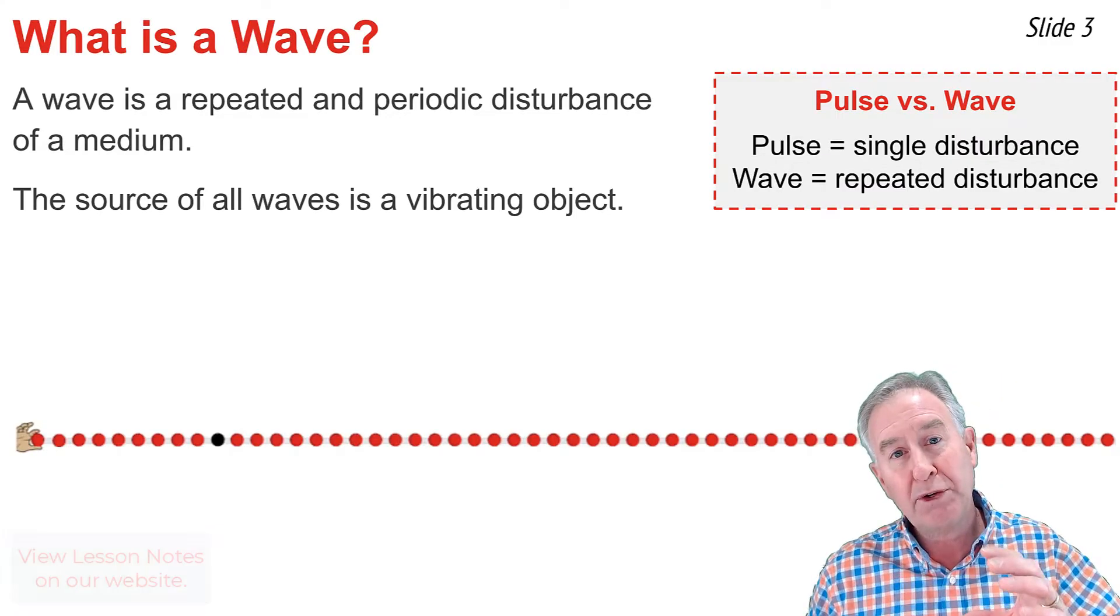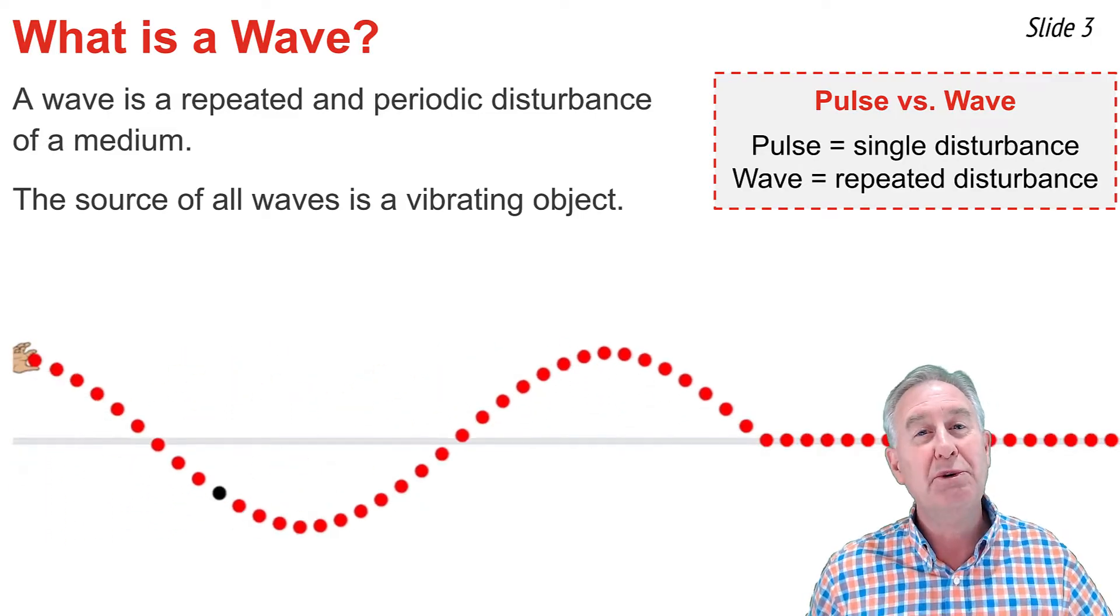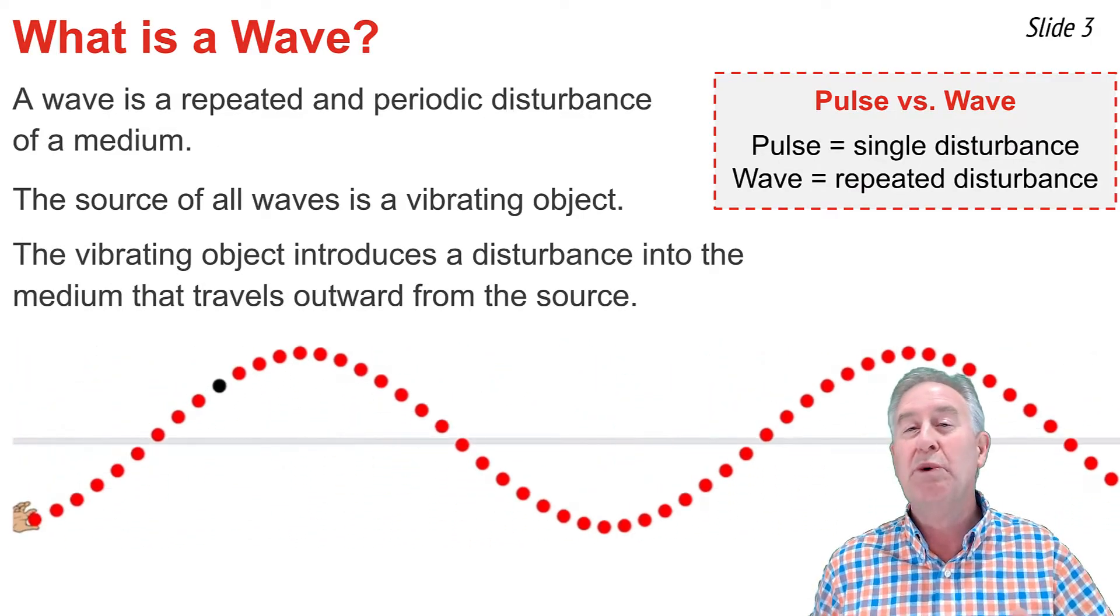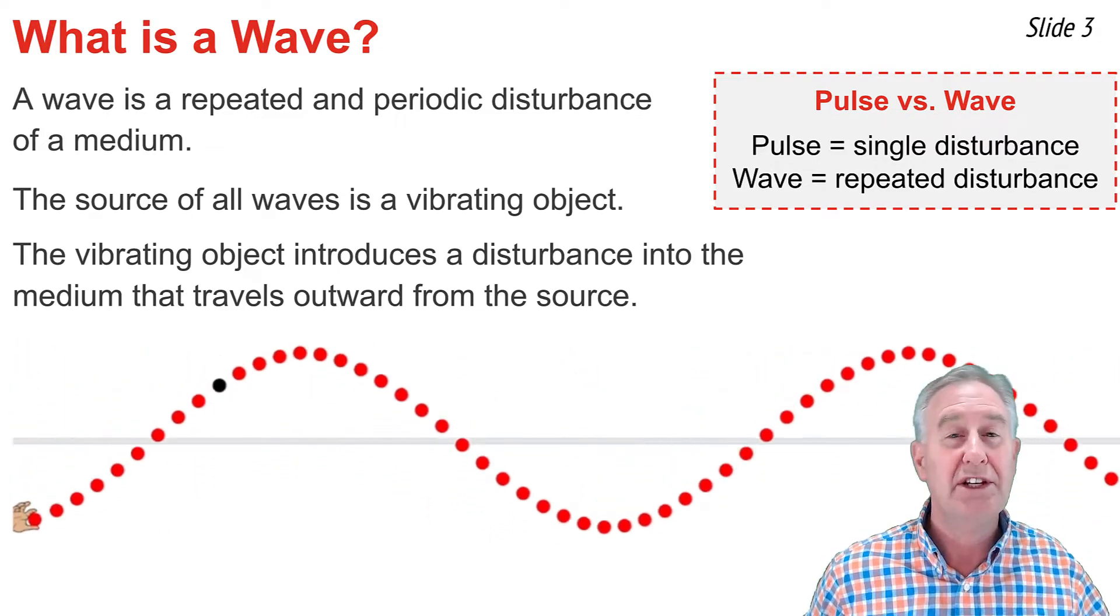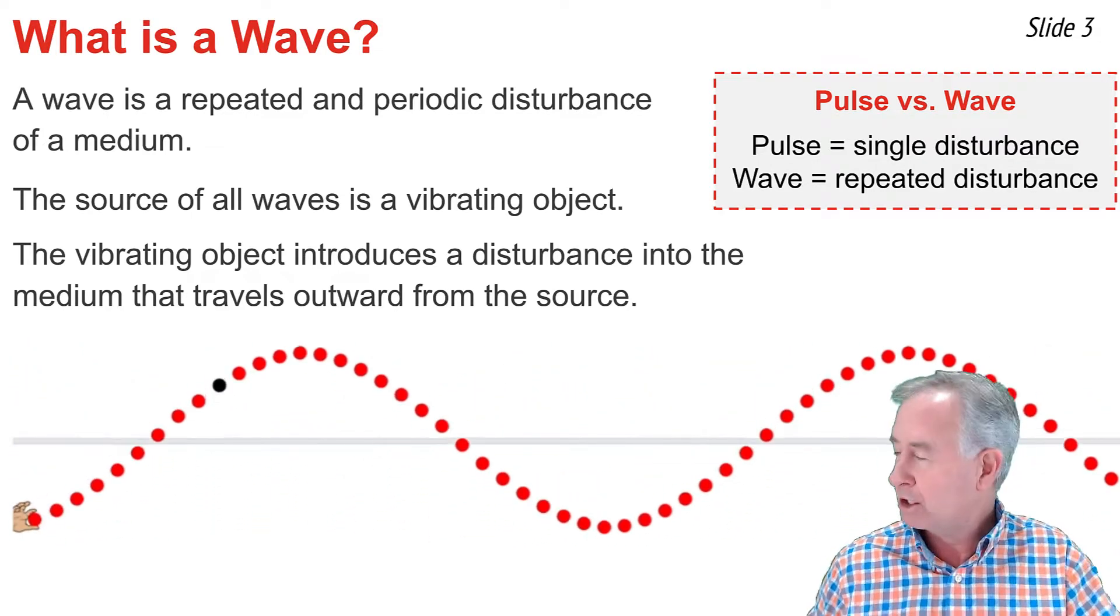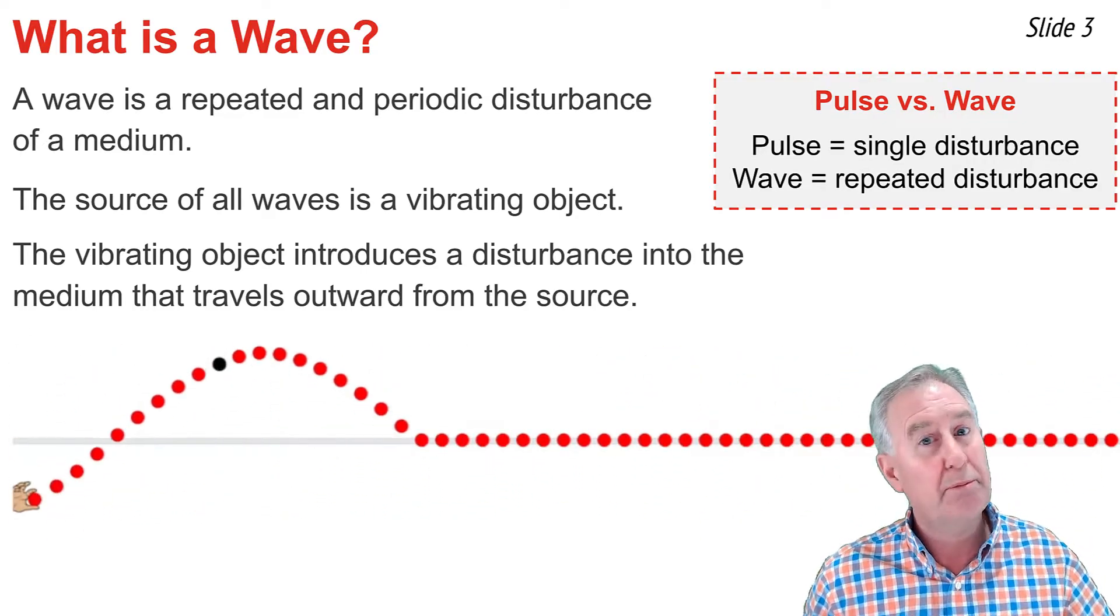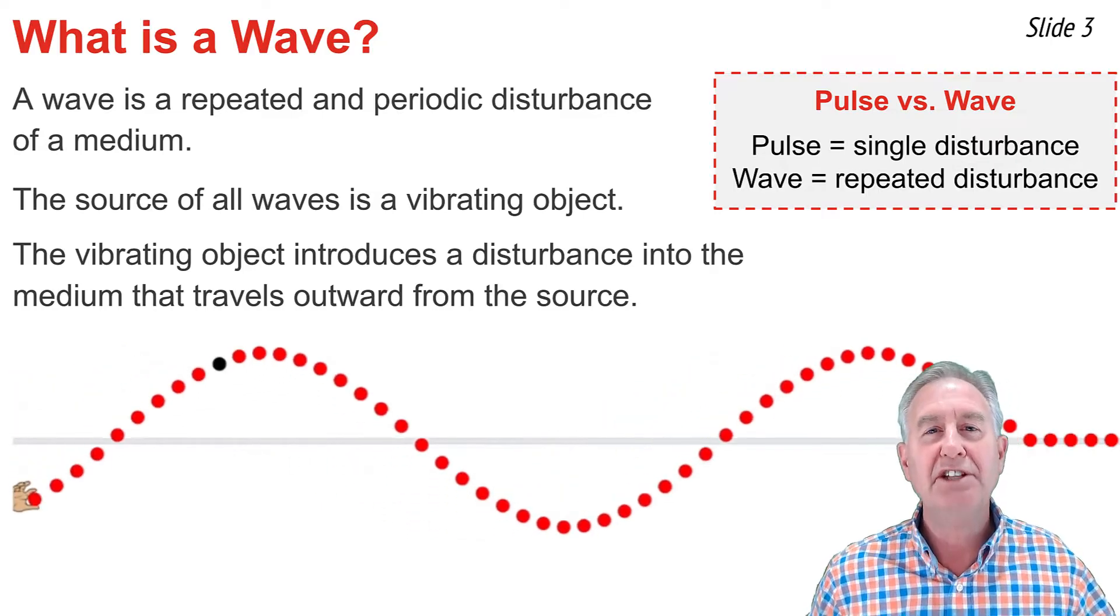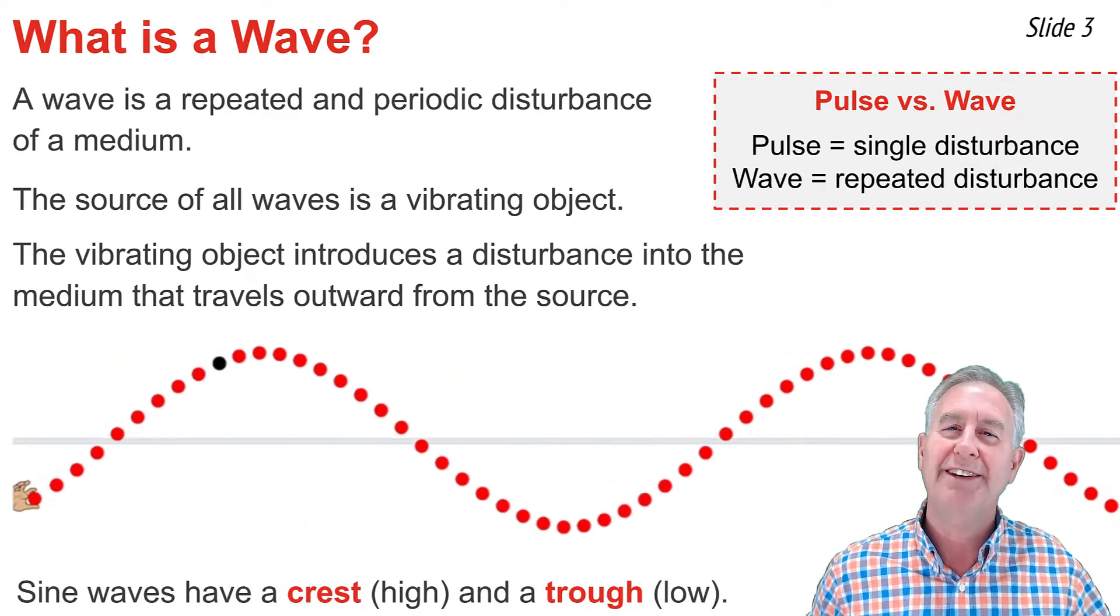But if I take the first coil and vibrate it up and down, I will disturb it and introduce a disturbance in the medium that spreads throughout the medium. That's why we say the source of all waves is a vibrating object. This particular wave is known as a sine wave. You're familiar with it, probably from math class. It has the familiar high points and low points known as crests and troughs.